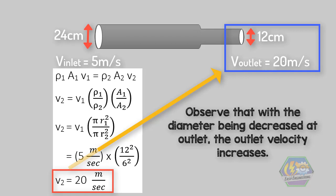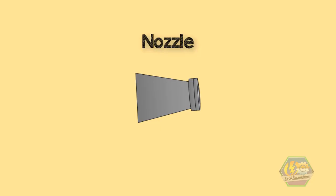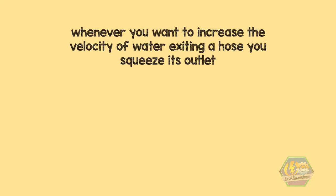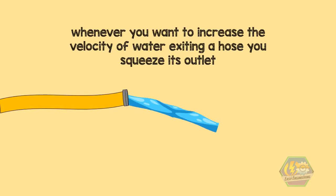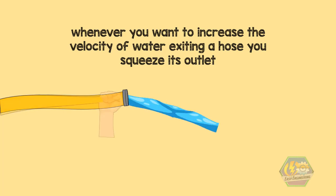Observe that with the diameter being decreased at the outlet, the outlet velocity increases. One application of this is the nozzle. You may not have known it before, but you have already applied this principle whenever you want to increase the velocity of water exiting a hose — you simply squeeze its outlet.